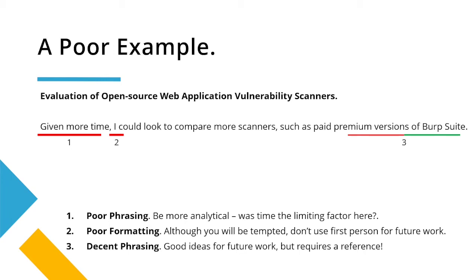Being critical doesn't just help you avoid that pet peeve — it also allows you to thematically group ideas of future work by reasoning. So if you said it was your lack of technical knowledge, and there were several points, then you could group them all together under technical knowledge. For example: 'Greater technical knowledge may allow for exploration of XYZ.' These are much better than saying 'given more time.'